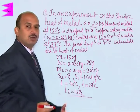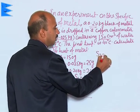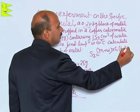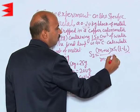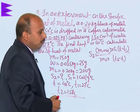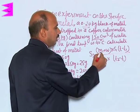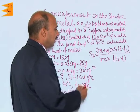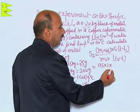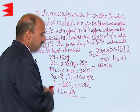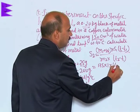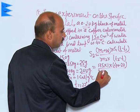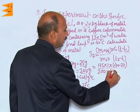We use the calorimeter formula: S2 equals (M1 plus W) into specific heat of water into (T minus T1), divided by M2 into (T2 minus T). Putting all the values: (150 plus 25) into 1 into (40 minus 27), divided by 200 into (150 minus 40).